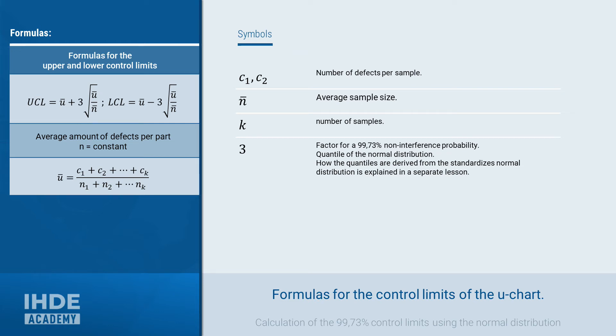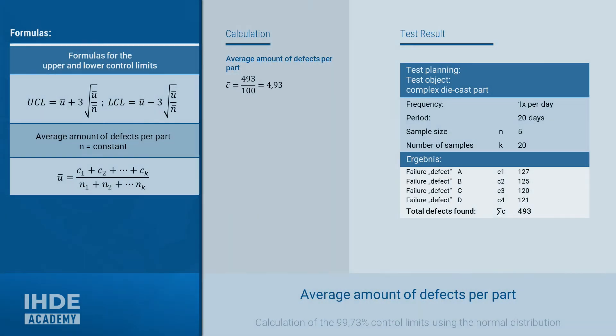The 3 before the root sign is the quantile of the standard normal distribution for the non-interference probability of 99.73%. From the data of the tests, an average defect rate for u bar is calculated as 4.93.